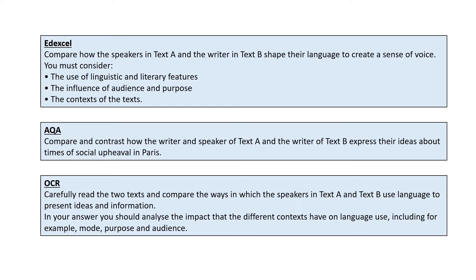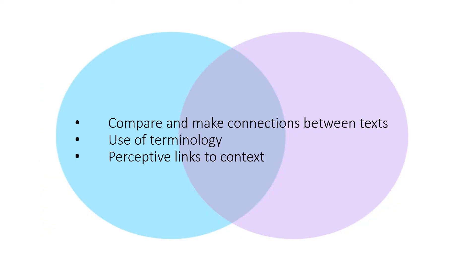There are a lot of similarities between these questions in the way they're worded and marked. In particular, all three mark schemes talk about students being able to compare and make connections between the two given texts, use subject terminology accurately and fluently, and link their ideas to context in a perceptive or critical way. So the question is: how do you do this under the time pressure of an exam with at least one text you've never seen before?